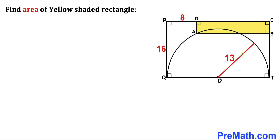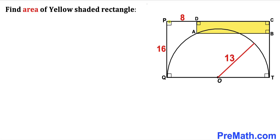Welcome to pre-math. In this video we have a semicircle confined in a rectangle. The radius of the semicircle is 13 units, the side length PQ of this rectangle is 16 units, and the line segment PD is 8 units. We are going to calculate the area of the yellow shaded rectangle ABCD.